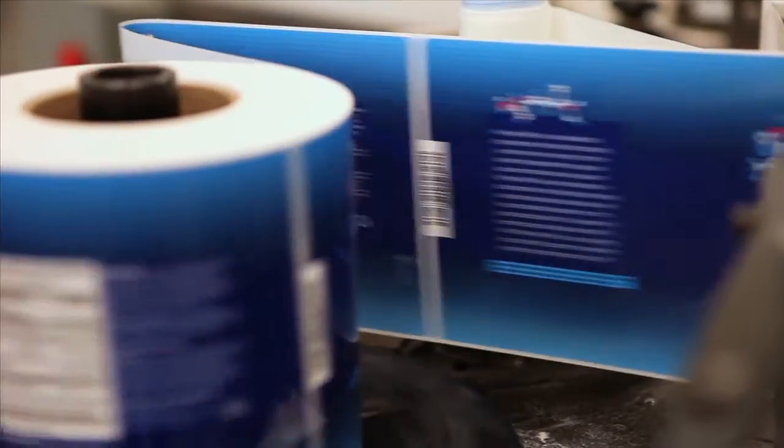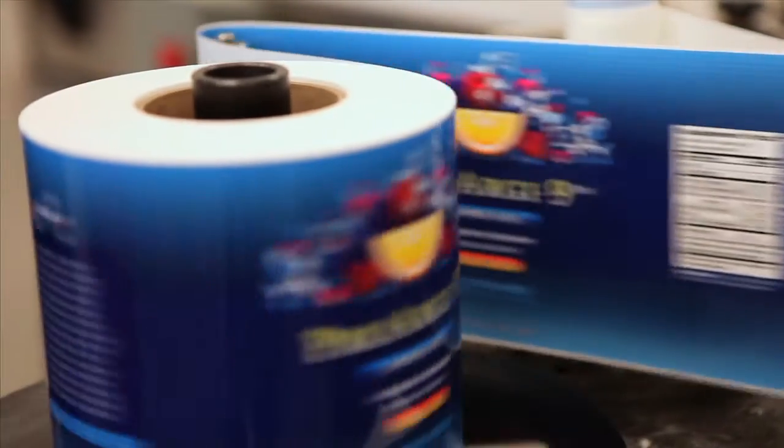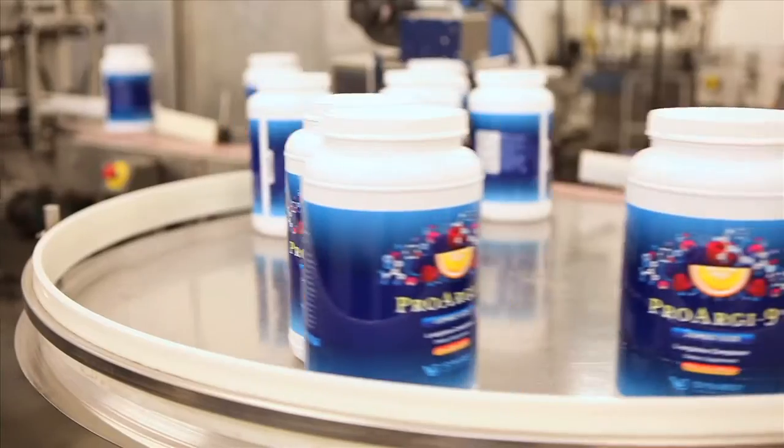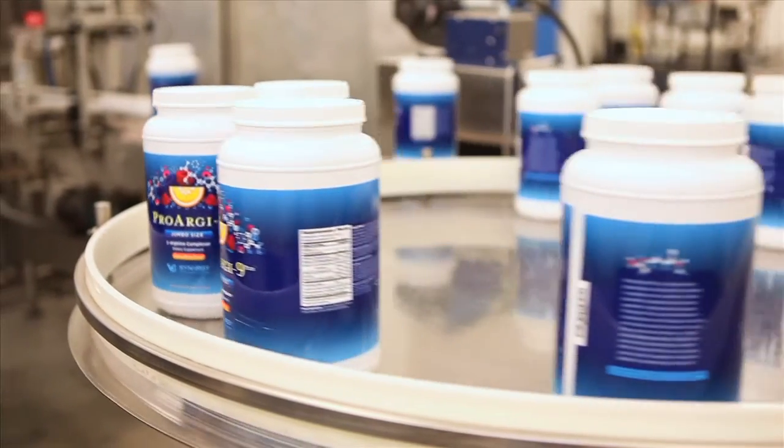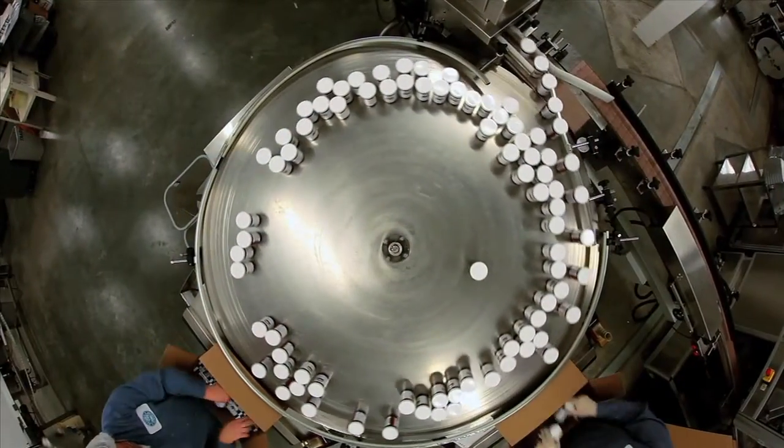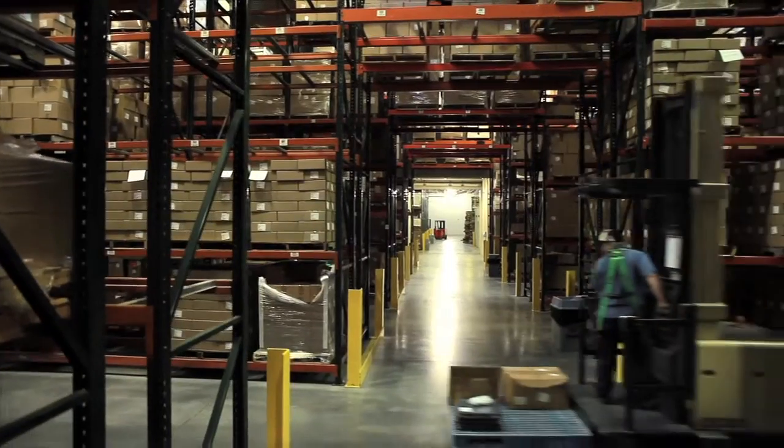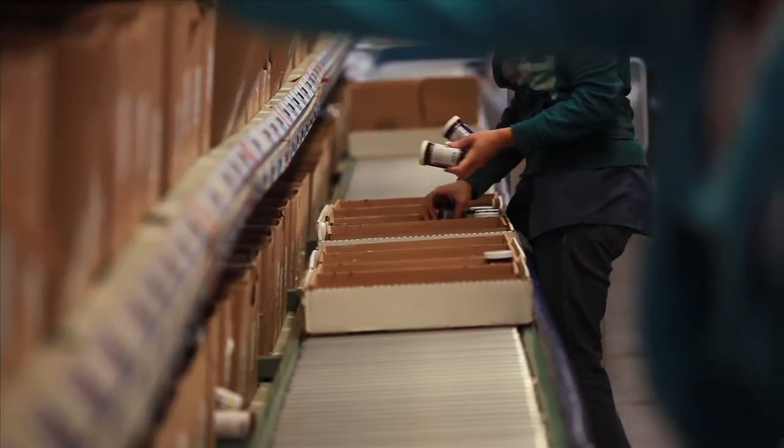Once packaged, the bottles are labeled using a computer-controlled inventory and barcode scanner system to verify accuracy. With a global product line of over 600 products and labels for more than 30 countries on hand here in the warehouse, we have to make sure that every bottle's contents match the label.